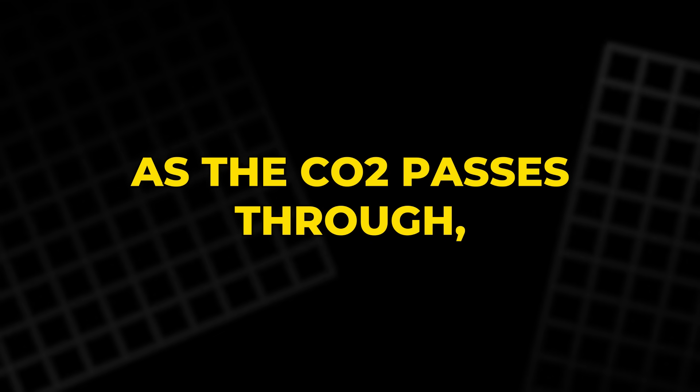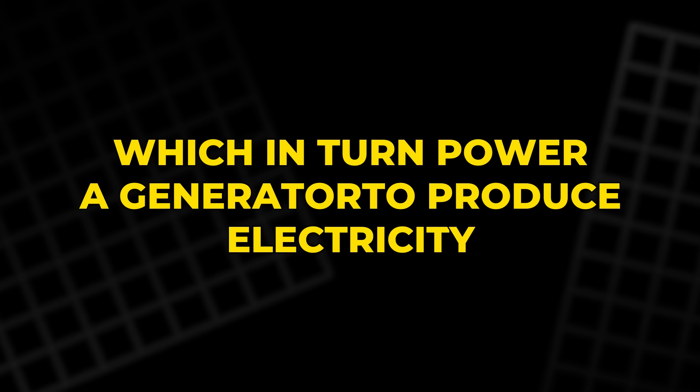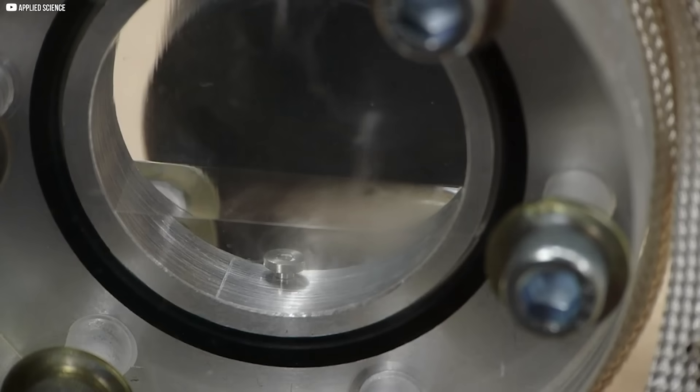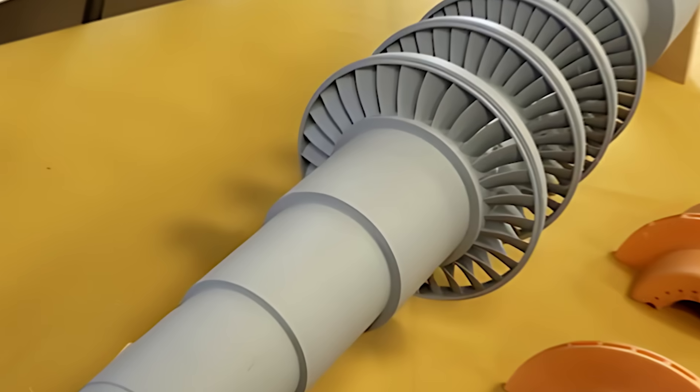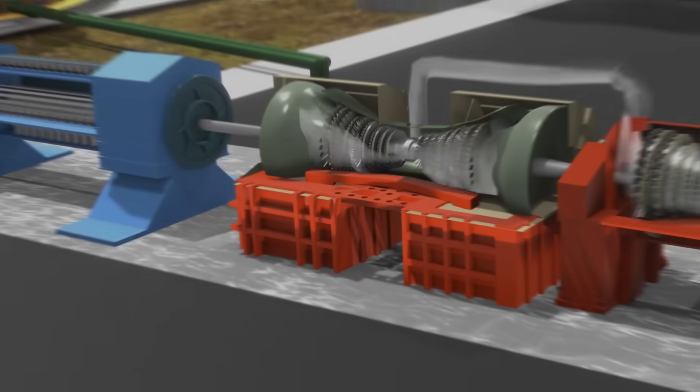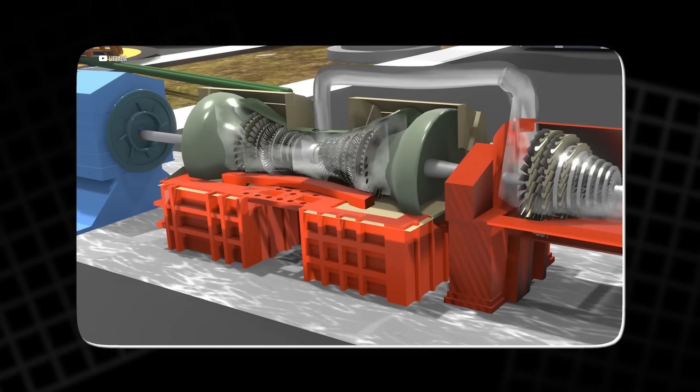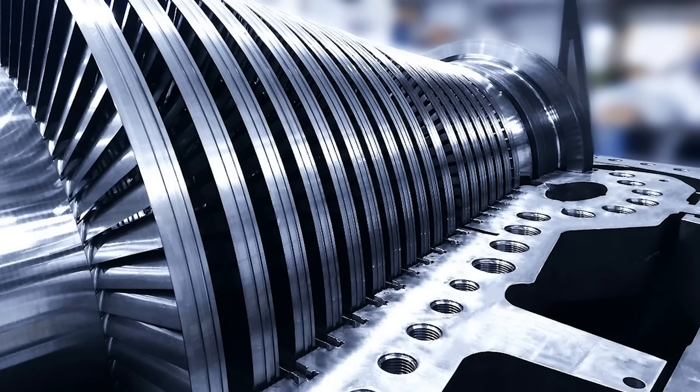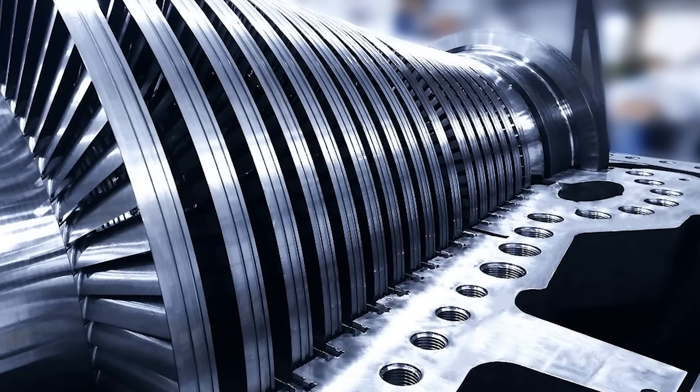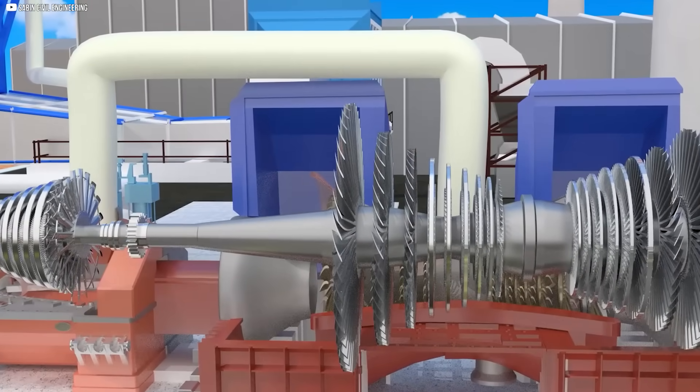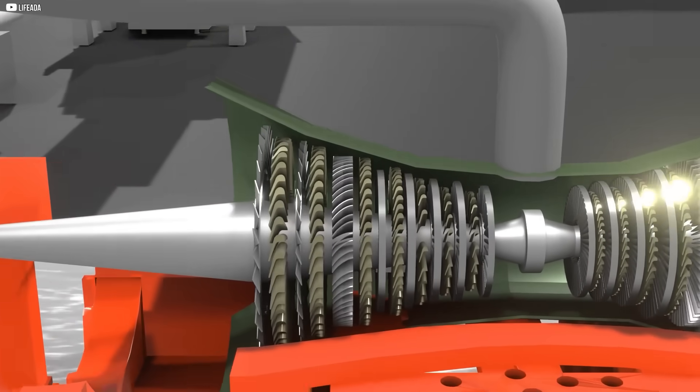As the CO2 passes through, it spins the blades, which in turn power a generator to produce electricity. The key difference here is that supercritical CO2 is much denser than steam, which means turbines can be significantly smaller and more compact. A supercritical CO2 turbine can be up to 10 times smaller than a comparable steam turbine, making it ideal for applications where space is limited. The high density also allows these turbines to generate more power for their size, increasing overall efficiency.